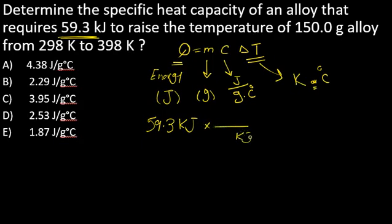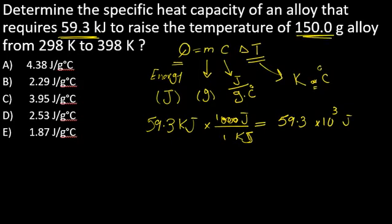To convert to Joules I multiply by the conversion factor: one kilo gives me 1000 Joules. So multiplying this number by 1000 gives me the energy transferred in Joules: 59.3 times 10 to the power of 3 Joules. What about m? It's 150 grams.